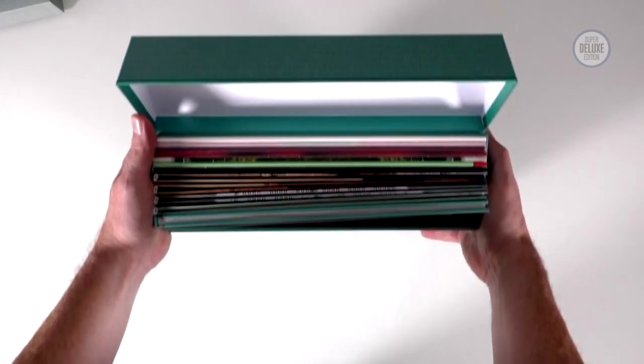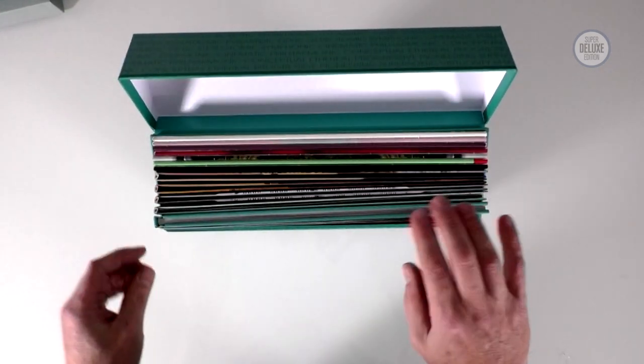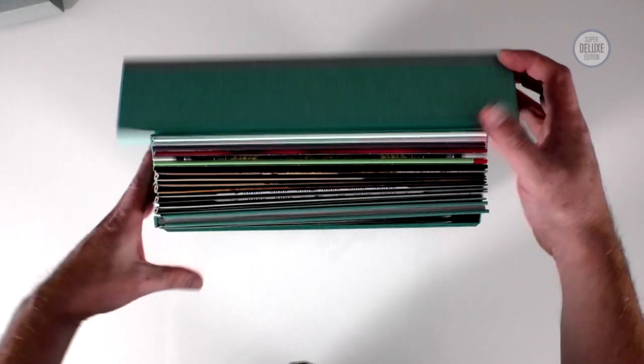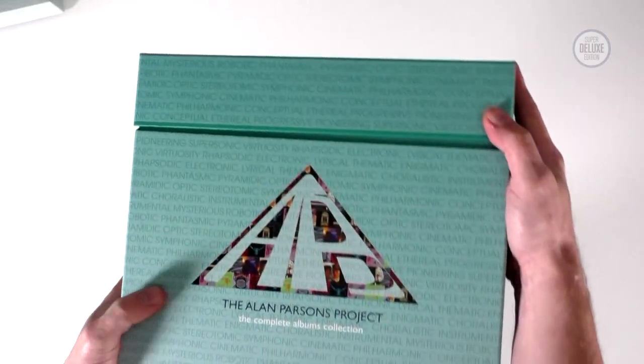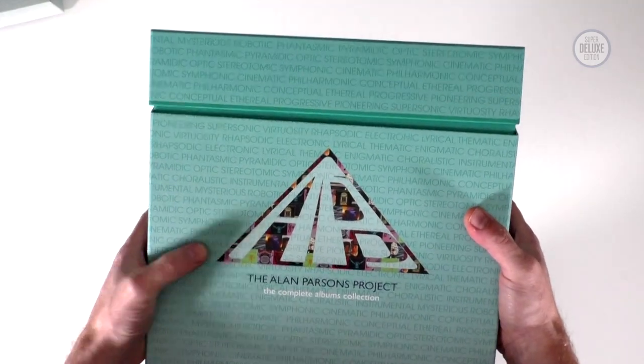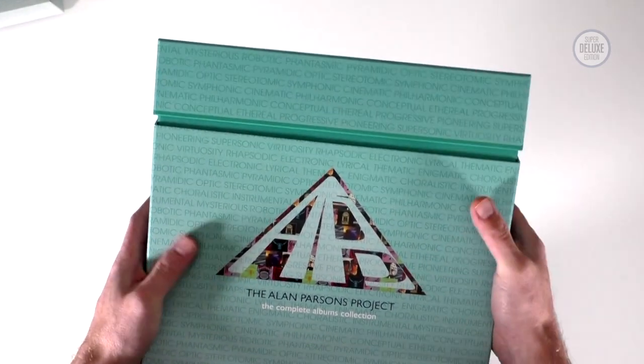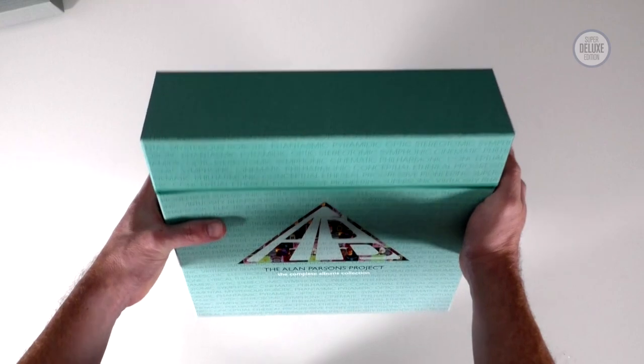And then inside here we've got all the records, there's a book and a poster. So we're going to open this up and take a look. The front is spot varnished just like the CD box. Actually this triangle here is spot varnished. So it's very nicely presented.